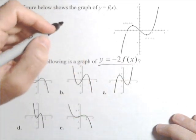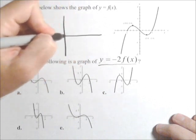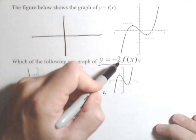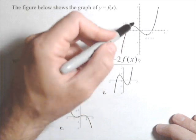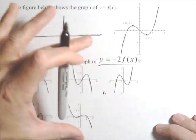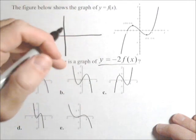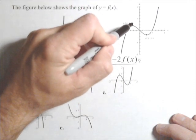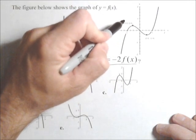So what this does, this particular transformation, this multiplies all our y-values by -2. So it's going to end up flipping the graph over the x-axis and vertically stretching it by a factor of 2, because if we think of multiplying the y-values by -2...